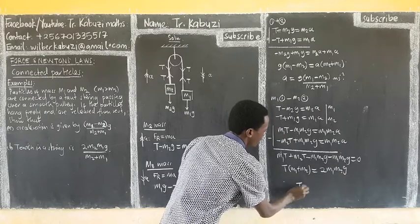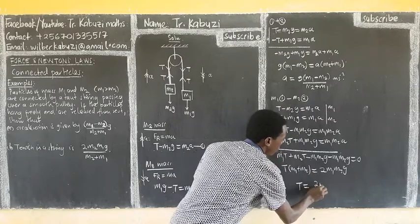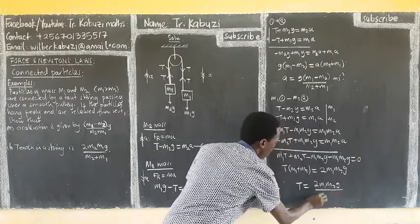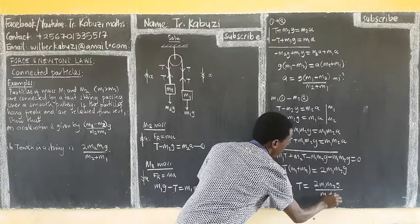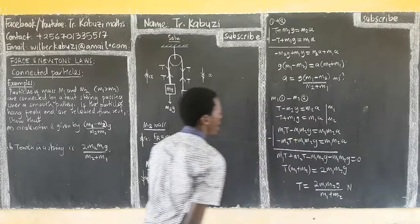So from here, our T is going to be, if we divide, 2M1M2g over M1 plus M2. And use Newton if you want, and put there, Newton.